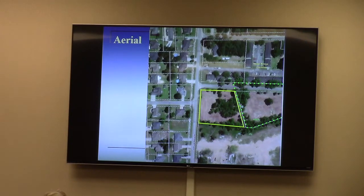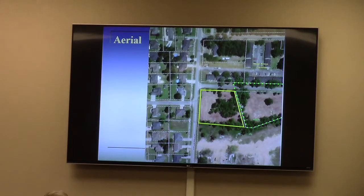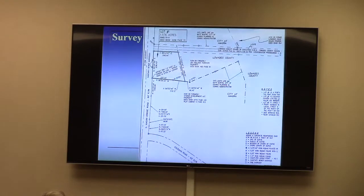This is one of two parcels that the applicant owns. The parcel shown on the map is on the west side, which is in the city limits — the green dashed line is the city limit line. The applicant also owns a landlocked parcel immediately to the east, which is currently in Lowndes County, unincorporated, and is zoned R-21.